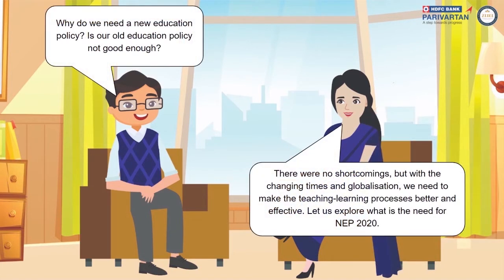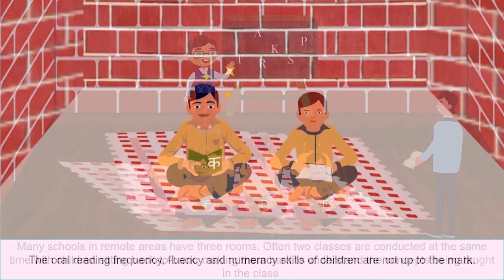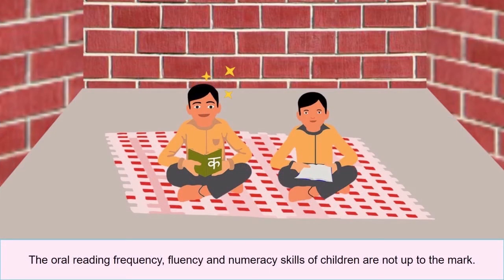Why do we need a new education policy? Are old education policies not good enough? There were no shortcomings per se, but with changing times and globalization, we need to make teaching-learning processes better and effective. Many schools in remote areas have only three rooms — often two classes are conducted at the same time with children sitting back to back, making it hard to understand the concepts being taught. The oral reading frequency, fluency, and numeracy skills of children are not up to the mark.